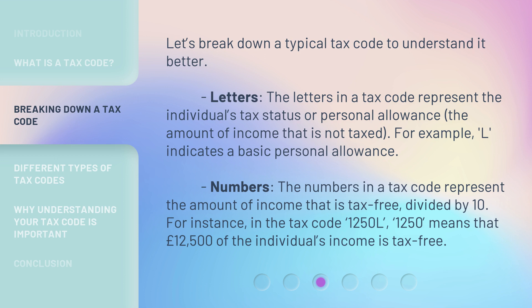Numbers: the numbers in a tax code represent the amount of income that is tax-free, divided by 10. For instance, in the tax code 1250L, '1250' means that £12,500 of the individual's income is tax-free.